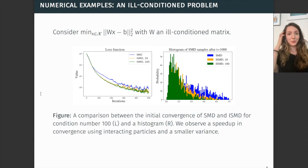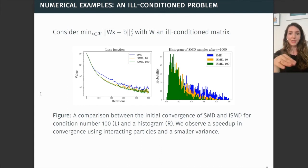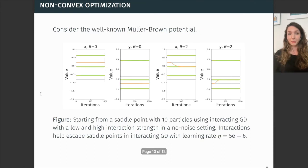Let's look at some numerical examples. First, an ill-conditioned problem. What we see here is that if we run 1, 10, or 100 particles, we are actually able to converge way closer to the optimum using more particles, as expected from our theoretical results. Also, the spread of the particles is smaller when we use more interacting particles.